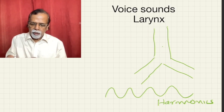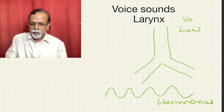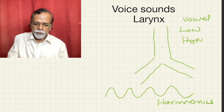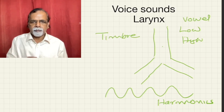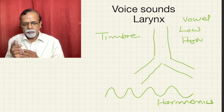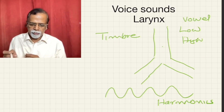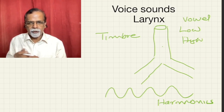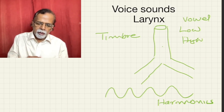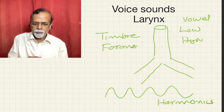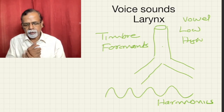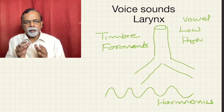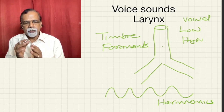A vowel contains both low-pitched and high-pitched sounds. The quality of the sound is called the timbre. The timbre depends upon the resonance of the sound that is occurring — depending upon the size of the airway, the sound generated gets resonance. It is called a formant. So the quality of the sound is determined by the size of the airway. That is why, even though the pitch is similar, the quality of the sound can be different.